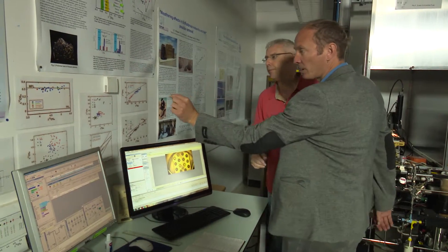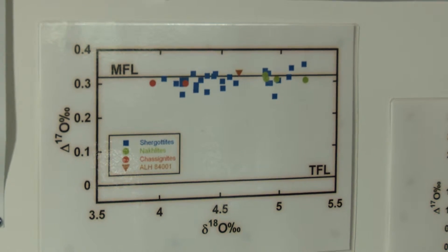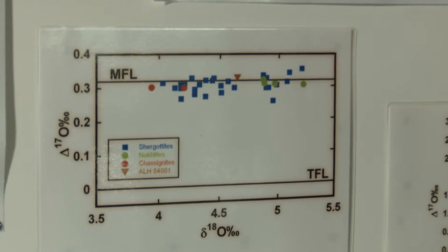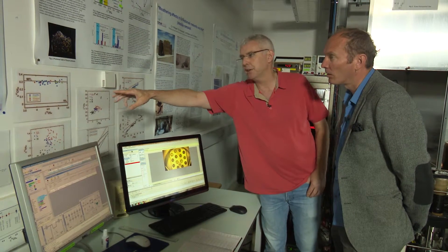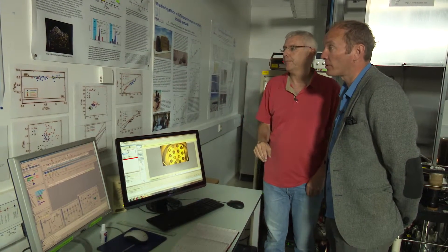And remind me again, what's the precision on the delta-18-O and the delta-17-O on that plot? The precision on delta-18-O is about plus or minus 0.1 per mil and a little bit more on delta, sorry, big delta-17-O is 0.01 per mil. Wow. So that's really quite reproducible.